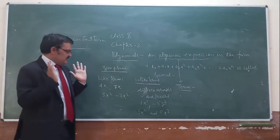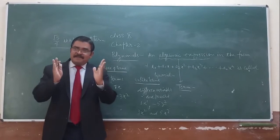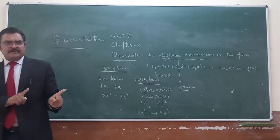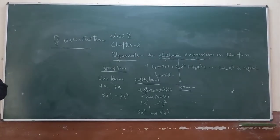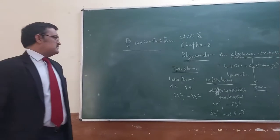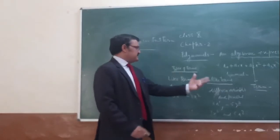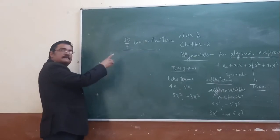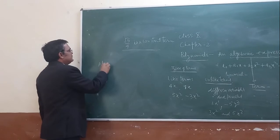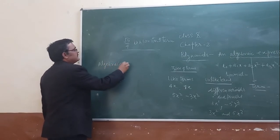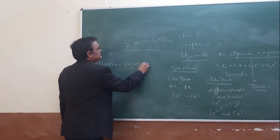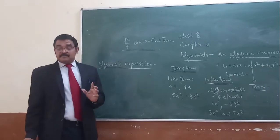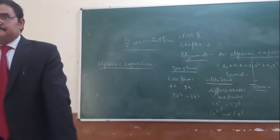Look at the same problem. If variables are different, then it will be different. And it is possible that the variable is different and the power is different. So these are the unlike terms. Now we will come to the main point — the algebraic expression.